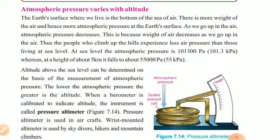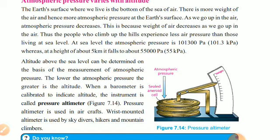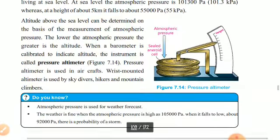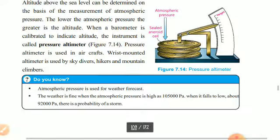On the basis of measurement of atmospheric pressure, the lower the atmospheric pressure, the greater the altitude. When a barometer is calibrated to indicate altitude, the instrument is called a pressure altimeter. Pressure altimeters are used in aircraft, while wrist-mount altimeters are used by skydivers, hikers, and mountain climbers. Atmospheric pressure is also important for weather forecasting. When pressure is high, around 10,500 Pascals, weather is fine. When it falls to about 9,200 Pascals, there is a probability of a storm.